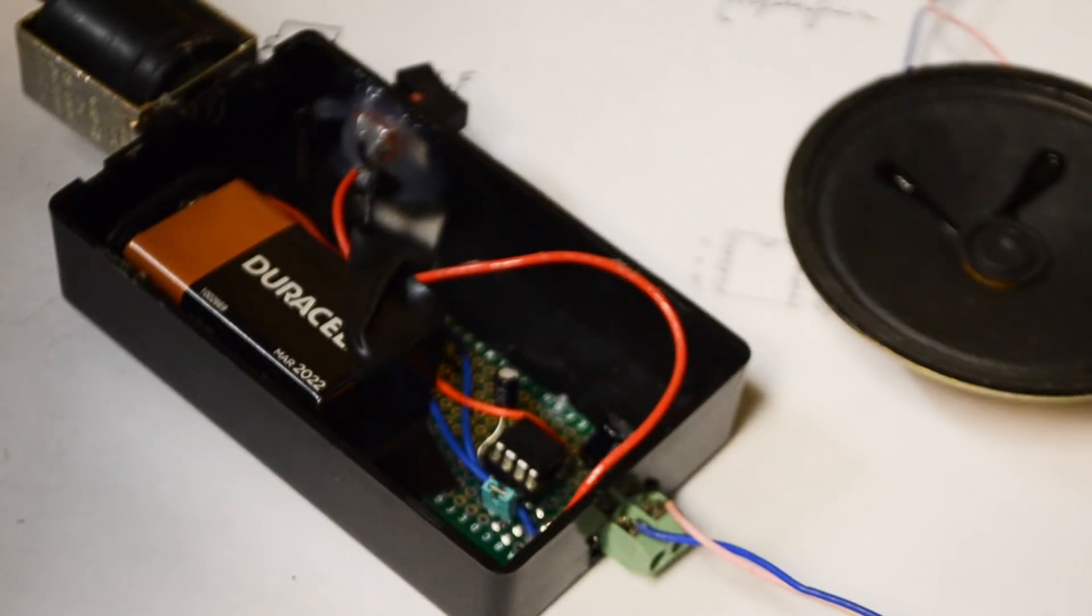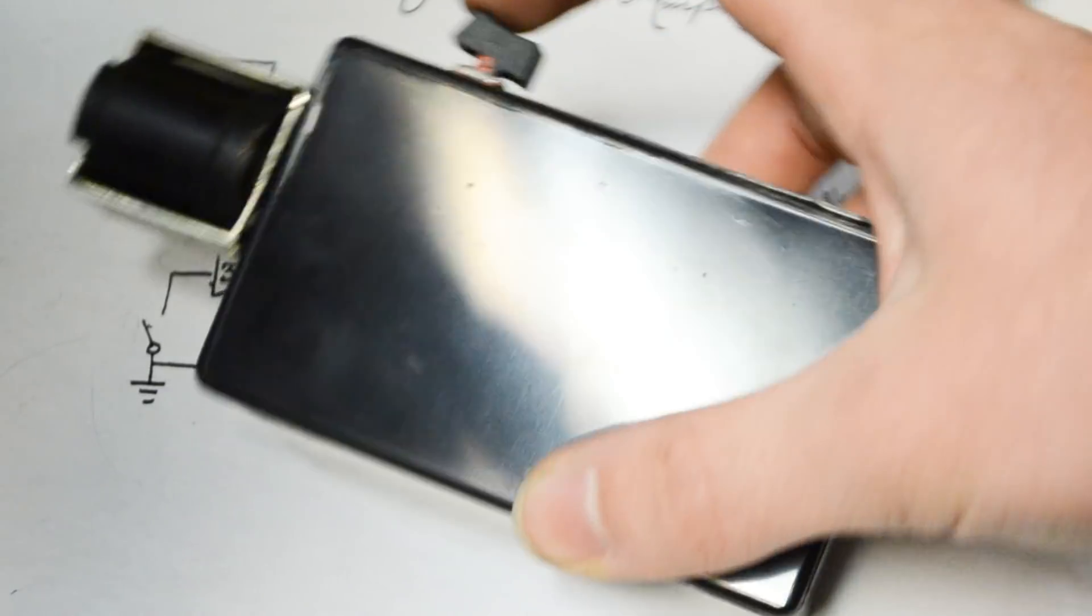Hello, this is Tanner Tech. Today we're going to be showing you how to build an RF interference amplifier.